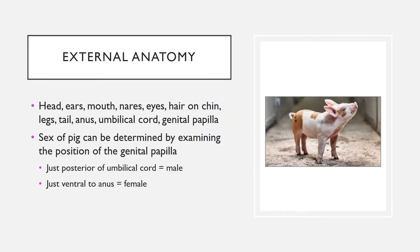For external anatomy, most of the structures should be fairly obvious. You have a head with eyes, mouth, and nares which are the nostrils. You can also have hair on the chin. Obviously there are legs, and there's a tail. In fetal pigs, you'll have an umbilical cord coming off the ventral side. You have an anus and then genital papillae.